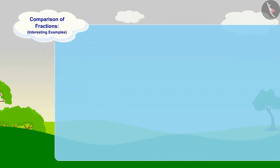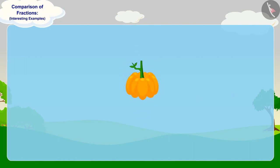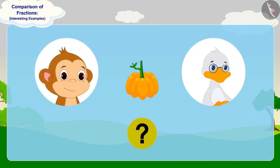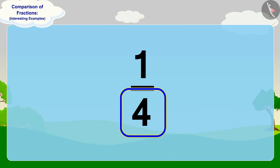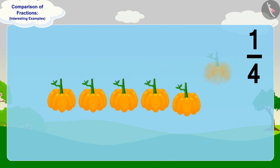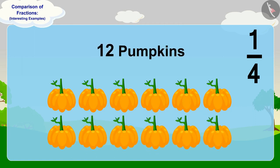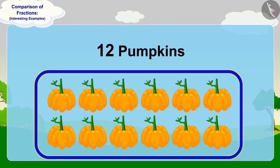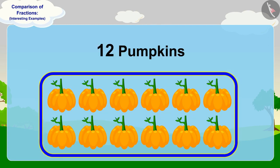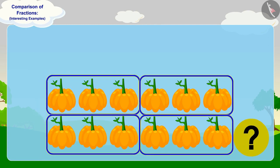Children, can you tell how many pumpkins Babban will give to uncle? To find one-fourth, we have to divide our whole into four equal parts. Here, we have a total of twelve pumpkins, so twelve pumpkins is our whole. We will divide them into four equal parts. If we make four equal parts of twelve pumpkins, how many pumpkins will be there in each part?